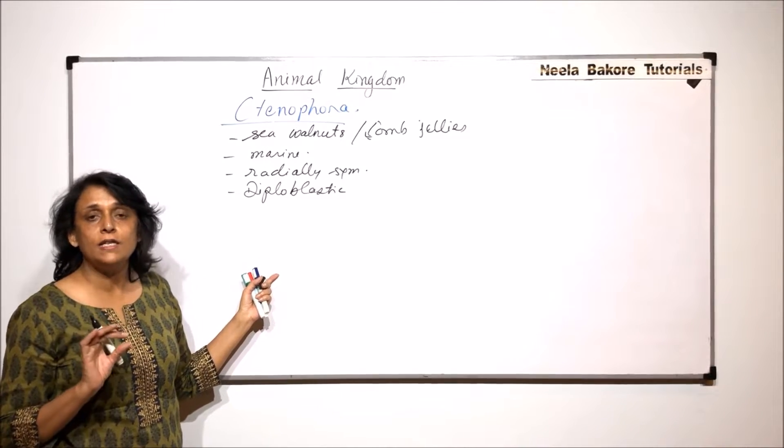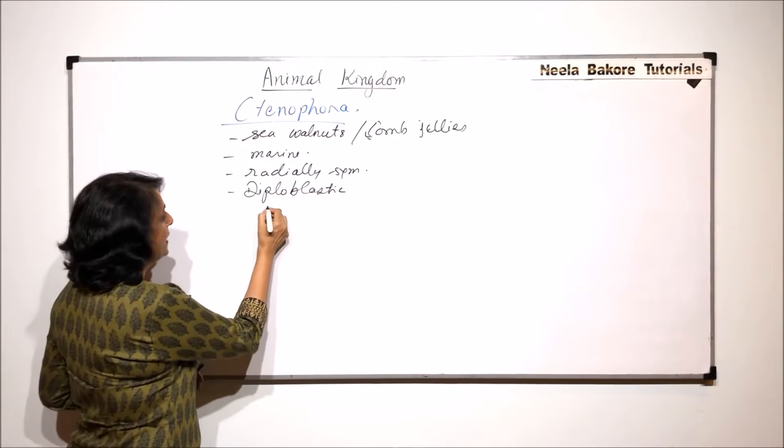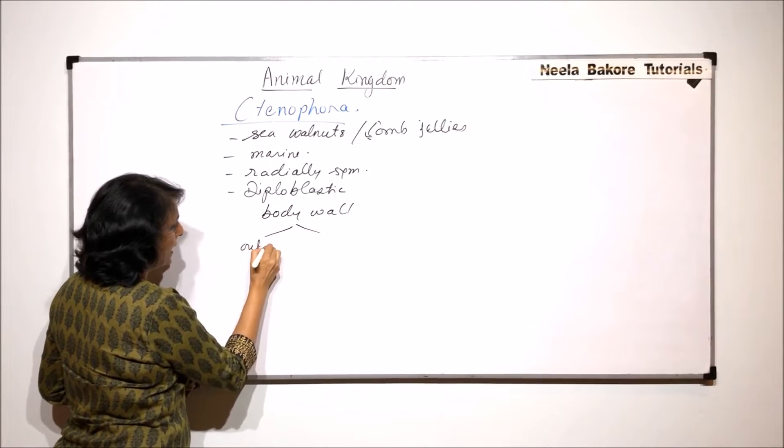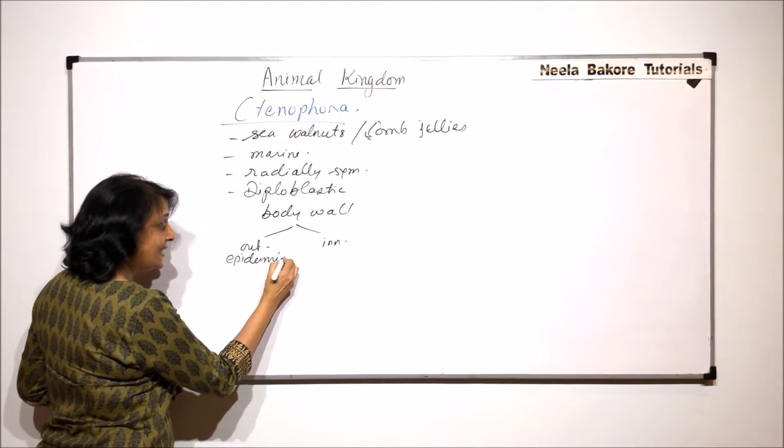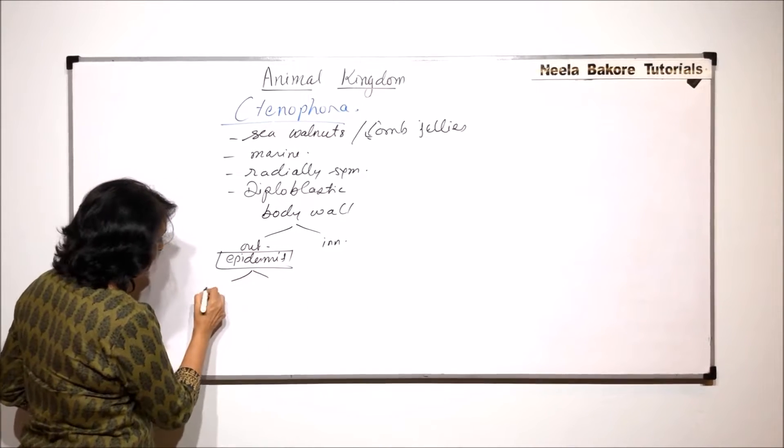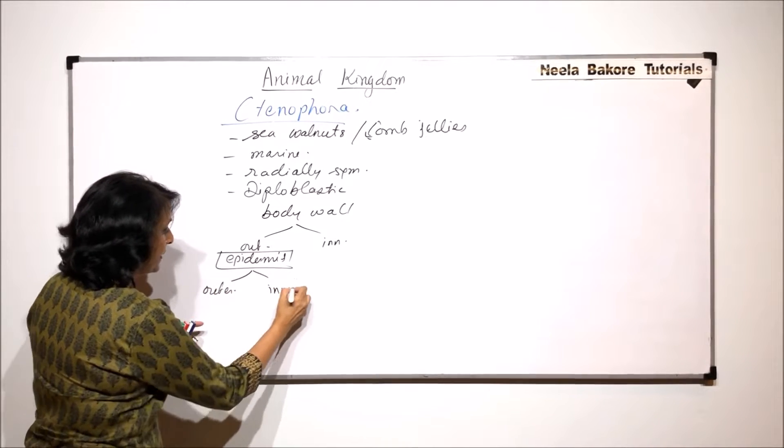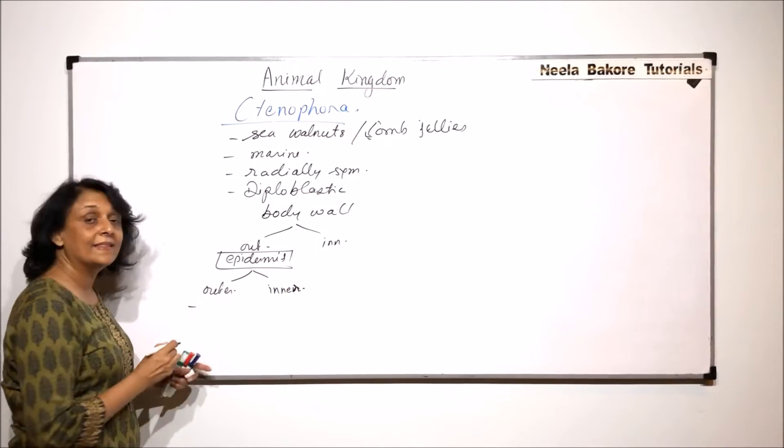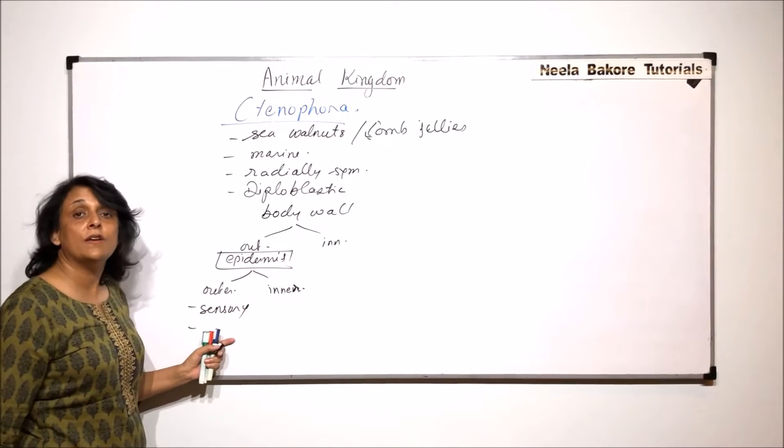Now their body wall is made up of two layers as we have talked of in the previous phylum, Cnidaria. So body wall has two layers: the outer layer and the inner layer. The outer layer is the epidermis and this epidermis also has two layers - the outer cells and the inner cells. The outer cells make the outermost cover of the body, and the cells which are here are sensory. They secrete mucus.